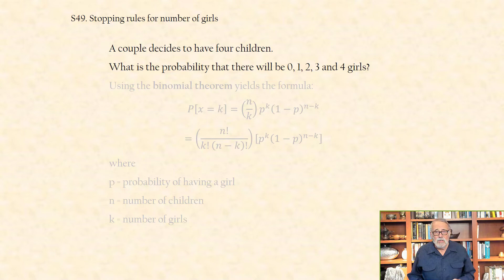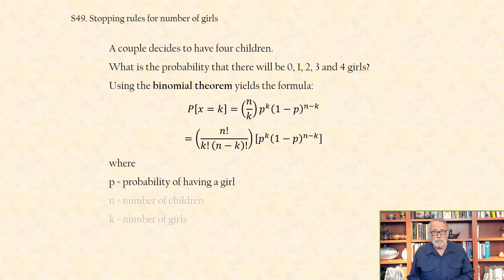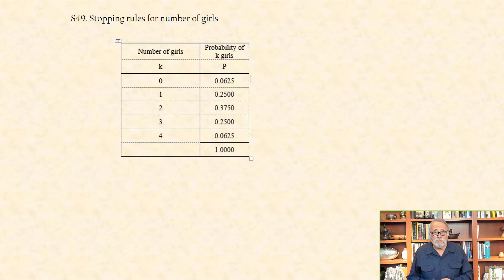Using the binomial theorem yields the formula shown here, where p equals the probability of having a girl, n equals the number of children, and k equals the number of girls. This table gives the probability of k girls in the second column and the number of girls k in the first column.